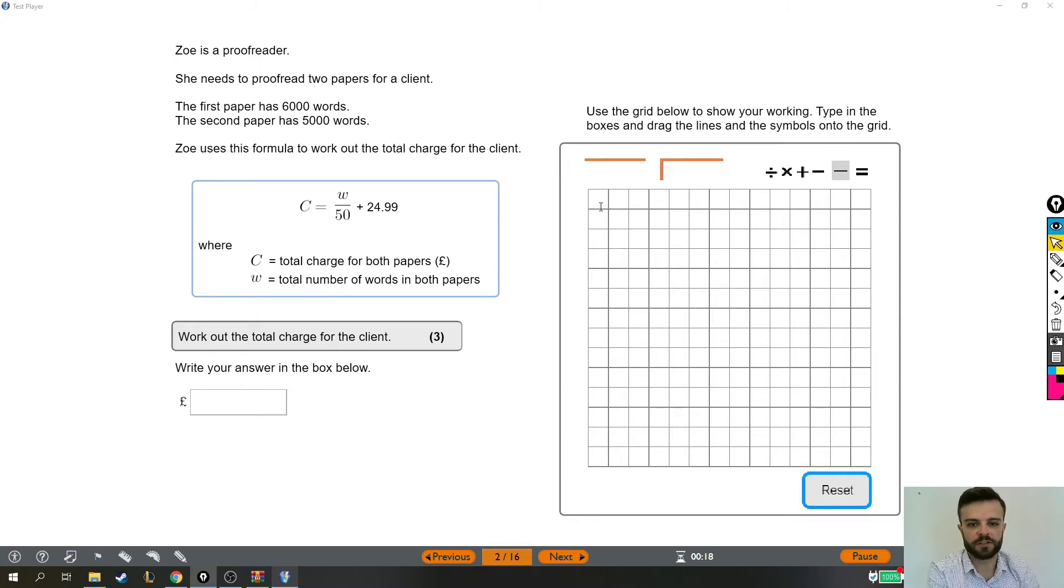So first thing we need to do is work out the total number of words on both papers. So we need to add the 6,000 words for the first paper plus the 5,000 words for the second paper. And that equals 11,000. So that's 11,000 words. Now that is what w is. So that is 11,000, the total number of words on both papers.